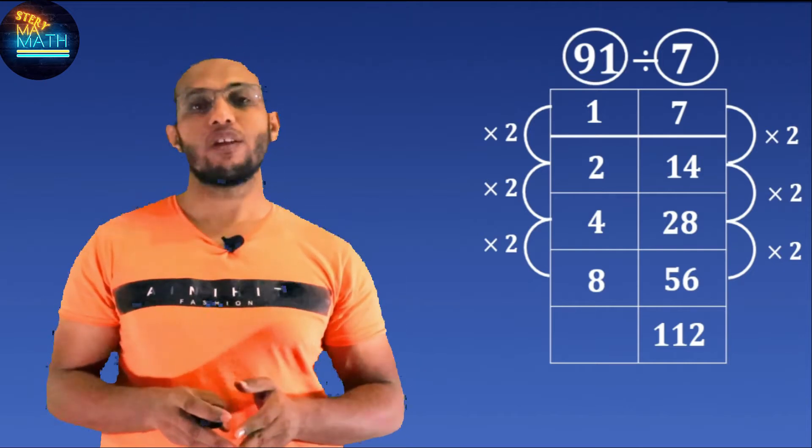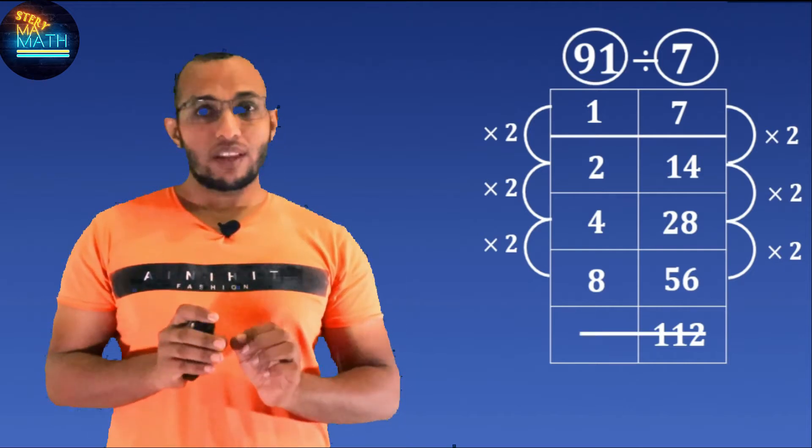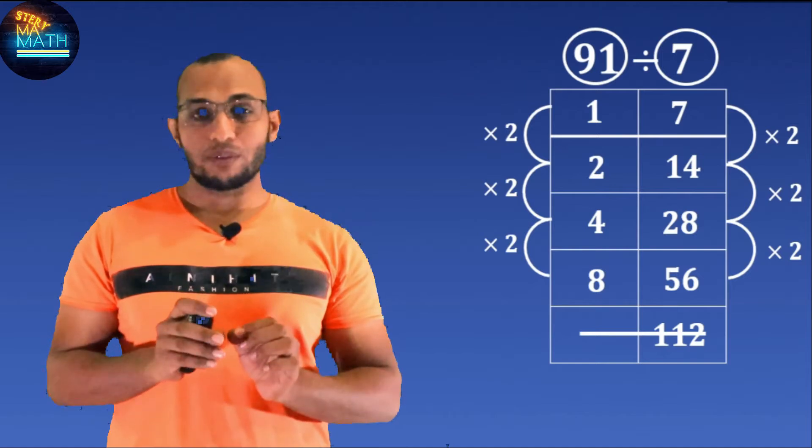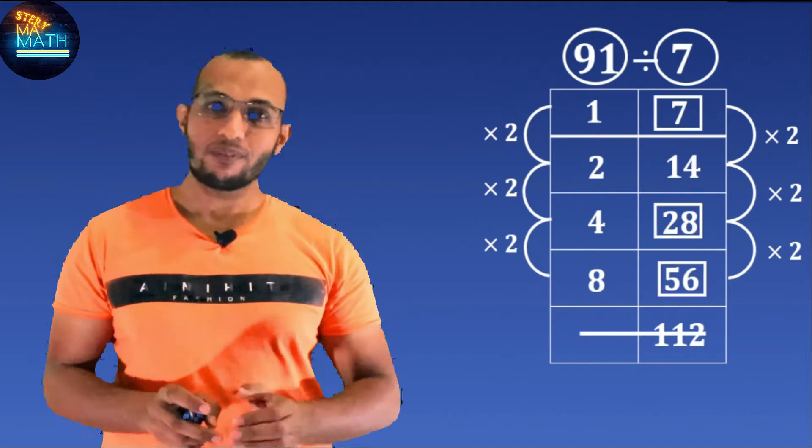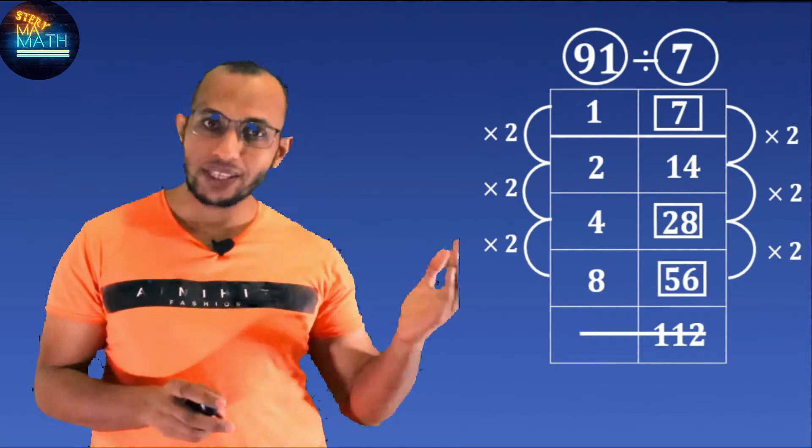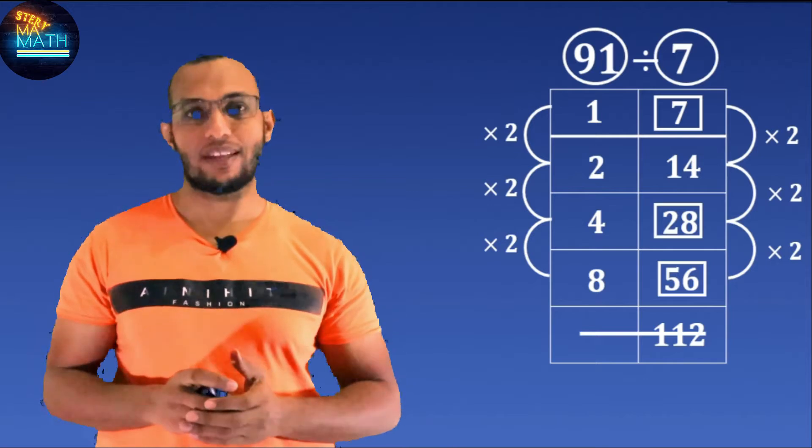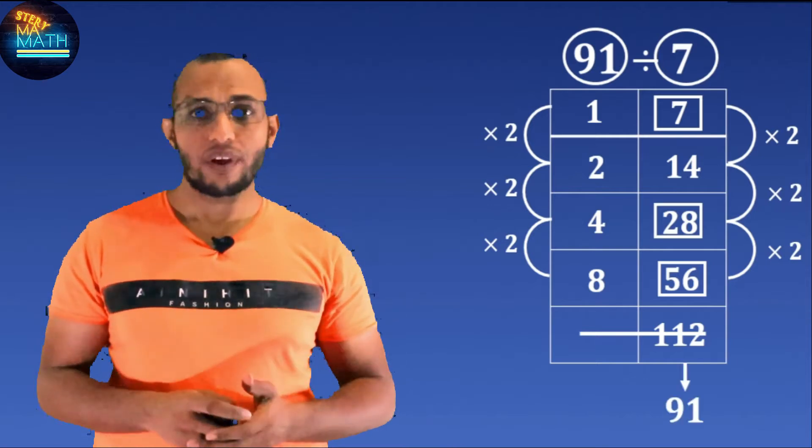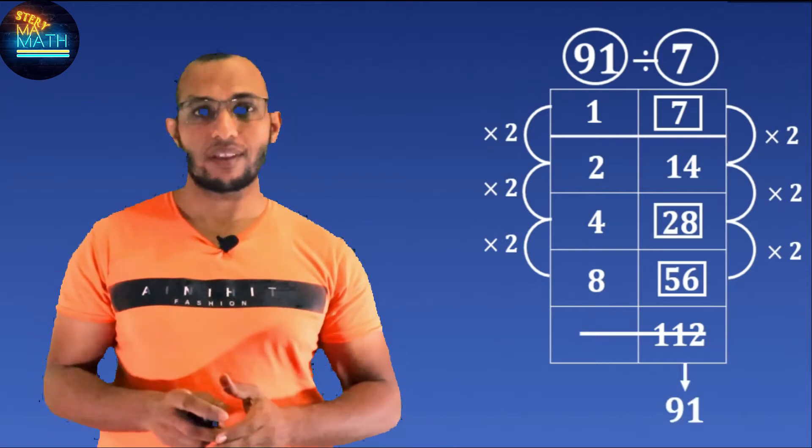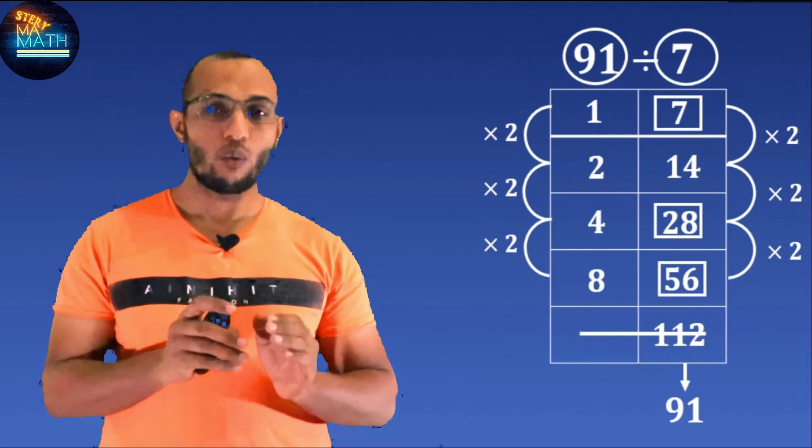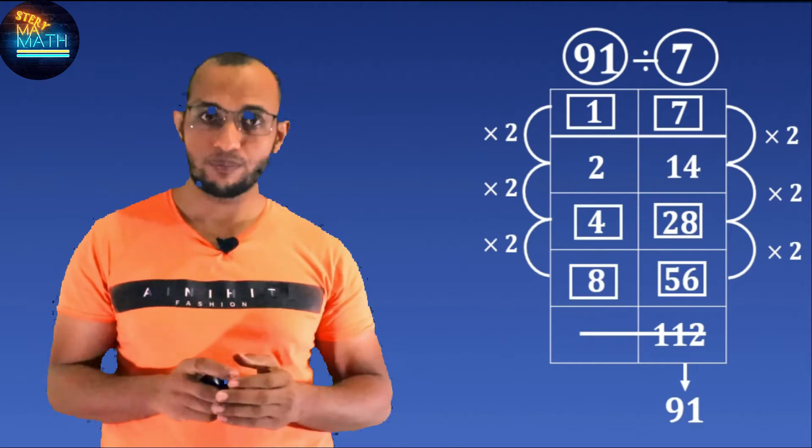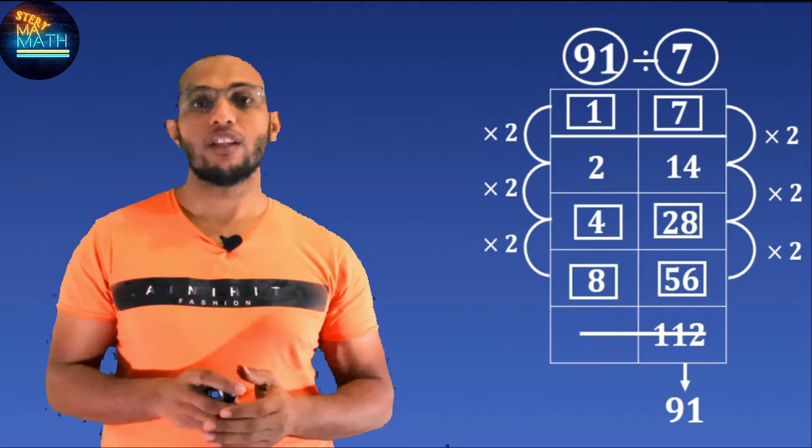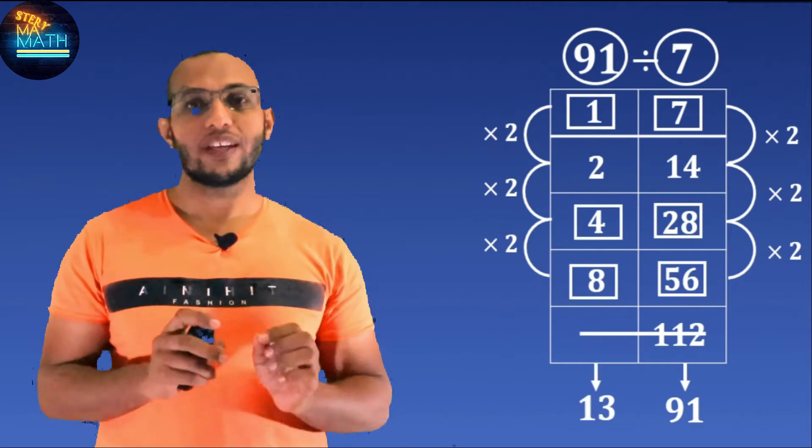And don't go any further, because if you doubled it, you get 112, which is bigger than 91. Now figure out the numbers that added up to 91. They are 7, 28, and 56. On the other hand, you add up the numbers aligned to them: 1, 4, and 8, to get 13, and that is the answer. So simple, so easy, right?